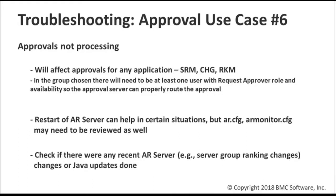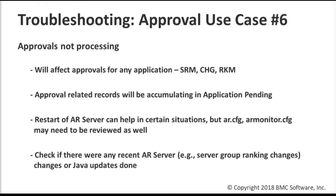The last one is a general issue where approvals aren't working across all applications — the previous five were specific to SRM, but this one could affect any application. For SRM, change, RKM, anywhere else you've got approvals lined up, they're not going to be processing, and if you check application pending you'll see approval-related records accumulating there. A restart of the AR server can be helpful, but you may need to check the AR config, AR monitor config, see if there were any changes to ranking, whether the approval server was enabled on a server in the group when it shouldn't have been, and also check if any Java updates were done recently as they can play a role.